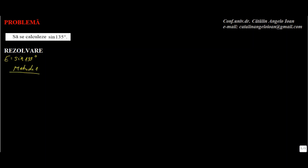Să se calculeze sinus de 135 de grade. Această problemă o putem face în foarte multe metode. Metoda întâi: să observăm că 135 de grade este 90 de grade plus 45 de grade. Vom folosi formula sinus de alfa plus beta, deci sinus de suma a două unghiuri, este egală cu sinus de alfa ori cosinus de beta plus sinus de beta ori cosinus de alfa.